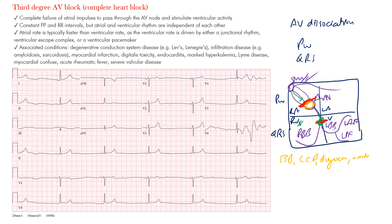Clinically, these patients are at high risk for hemodynamic compromise, ventricular tachycardia, standstill, and sudden cardiac death. They typically need a pacemaker — at least a temporary one while waiting for reversible causes like Lyme disease to resolve. There is complete failure of atrial impulses passing through to stimulate ventricular activity.